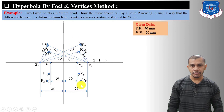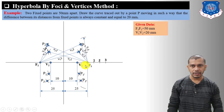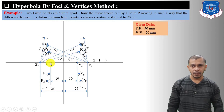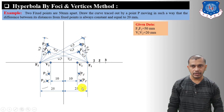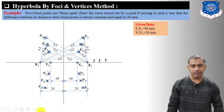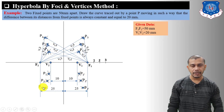Measure V1 to 3 distance on the compass and give an arc from focus F2 on both sides. Measure V2 to 3 on the compass and give an arc from focus F1 on both sides to get intersections, marking points P3 and P3' on both sides. Draw a freehand curve passing through all these points to obtain the hyperbola.